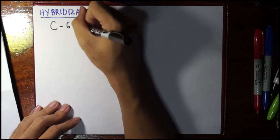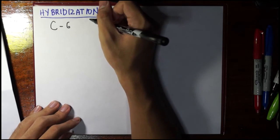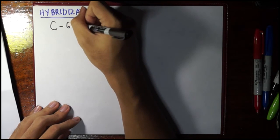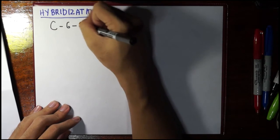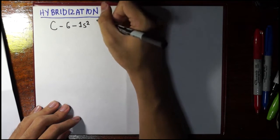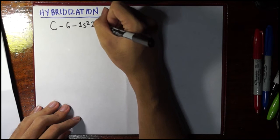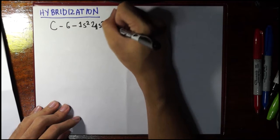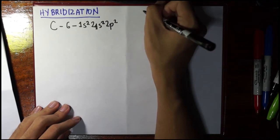Now, carbon has 6 electrons. It has an atomic number of 6, so it should be the number of protons and electrons. Well, if we specify it further, it would be something like this: 1s², then 2s². So 1, 2, 3. We have 4 electrons here, meaning the other 2 electrons are in the 2p.